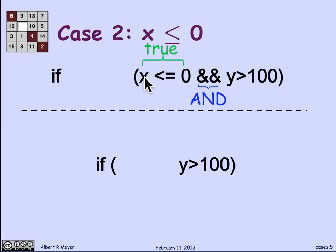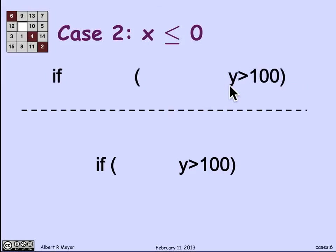And we have something of the form true and something or other. That means that the net outcome of this expression depends entirely on the something or other. That is, it depends entirely on whether y is greater than 0, because the x is less than or equal to 0. And so this expression can be simplified. It's going to behave exactly according to whether or not y is greater than 100. So look what I've just done.